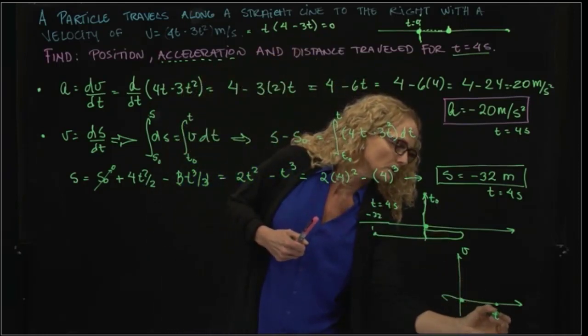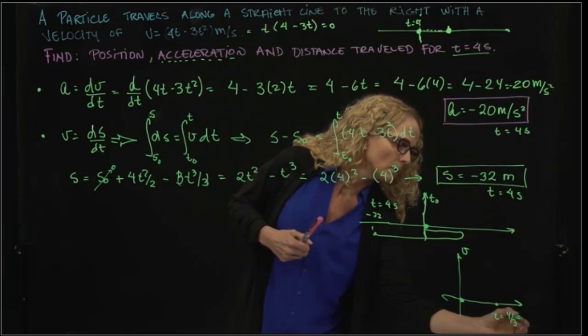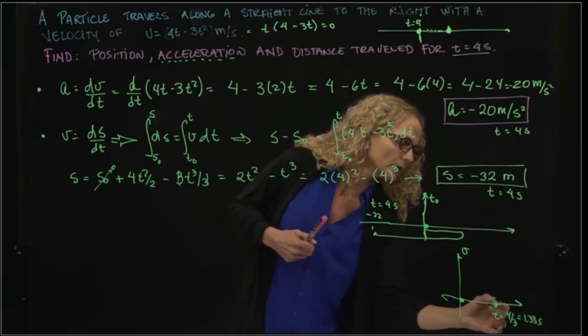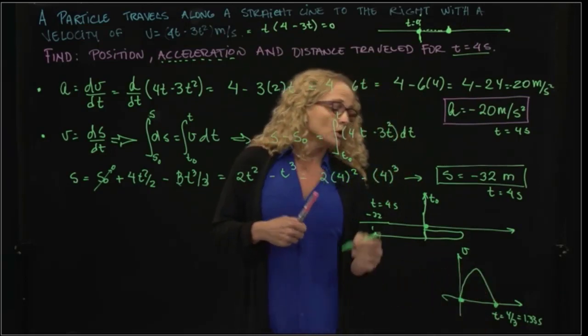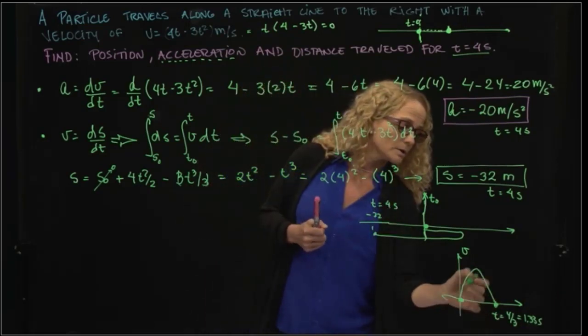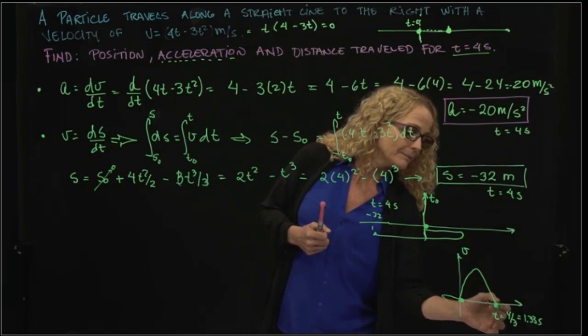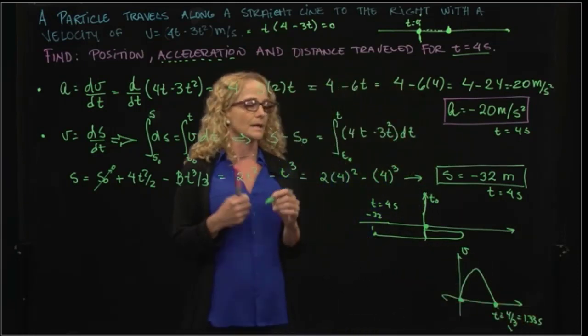So for t = 0, we have 0, and for t = 4/3, which is 1.333 seconds, it's 0 again. So our parabolic equation is something like that. So our velocity was positive, but it became negative at t = 1.33 seconds.